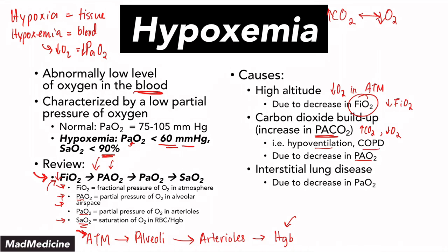Then you have interstitial lung disease, which is preventing oxygen from actually crossing over from the alveoli into the arteries. Because you're preventing that diffusion process, you're going to have a decrease in PaO2 — the partial pressure of oxygen in the arterioles themselves. So because you are preventing oxygen transfer and oxygen diffusion, you are going to see a decrease in PaO2 and SaO2, giving you a presentation of hypoxemia.